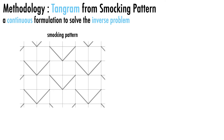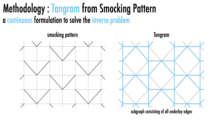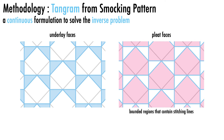Within the input smocking pattern, an edge is termed an underlay edge if it connects two different stitching lines, as highlighted on the right. The subgraph of the smocking pattern consisting of all underlay edges is called the tangram graph, as highlighted by the blue edges. This tangram graph is semantically meaningful as its edges partition the smocking pattern into distinct and disconnected regions. Regions devoid of stitching lines are called underlay faces, highlighted in blue on the left, while complementary areas containing stitching lines are called pleat faces, highlighted in pink on the right.